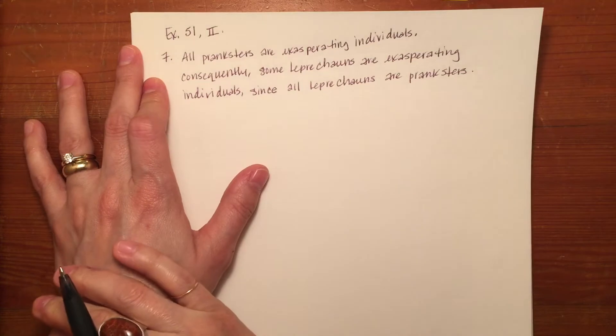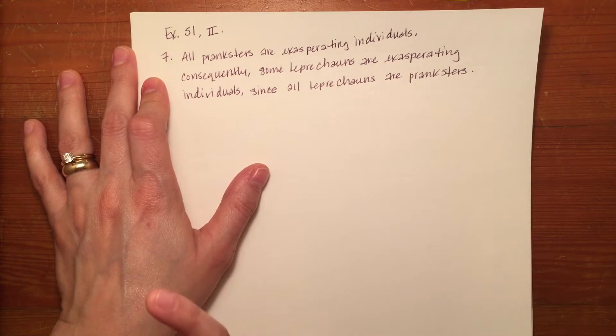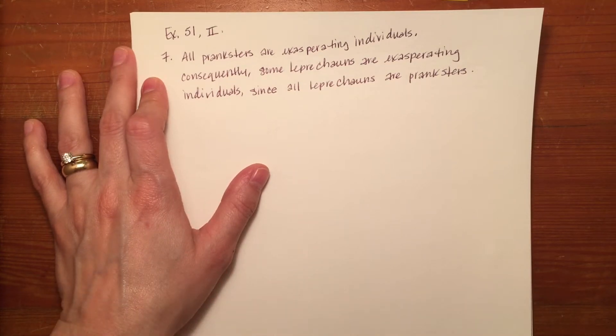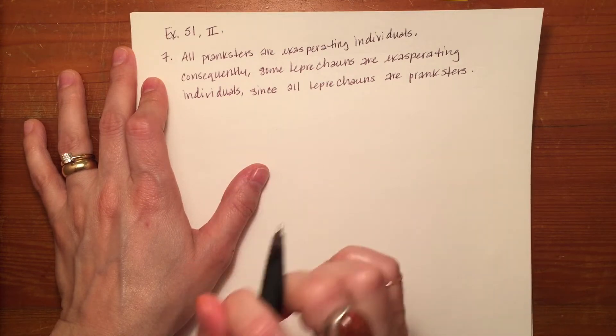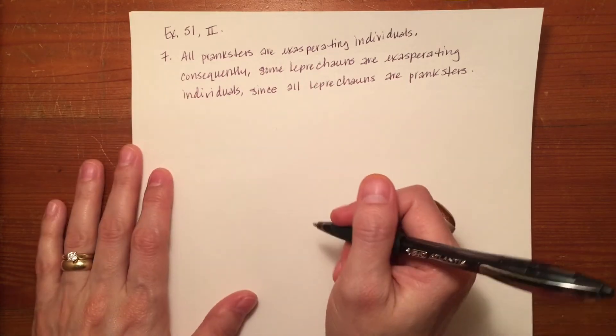So you should get yourself accustomed to looking for the conclusion because you will remember the conclusion is extremely important. If you identify the wrong statement as the conclusion, the mood will be incorrect, the figure will be incorrect, and therefore everything that you do after that will be incorrect.